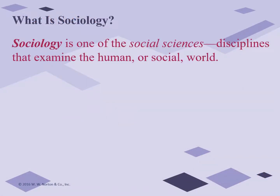We begin by looking at the fact that sociology is one of the social sciences, that's a part of the group that looks at the human or social world. The social sciences are interested in understanding the social world in the same way that the natural sciences are interested in understanding the natural or physical world. Think about things such as geology, astronomy, or chemistry. Social scientists and natural scientists even use many of the same research techniques, including the scientific method.